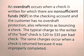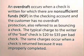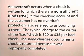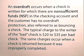An overdraft occurs when a check is written for which there are non-sufficient funds in the checking account and the customer has no overdraft protection, also referred to as bouncing a check. The typical charge to the writer of the bad check is $20 to $35 per bad check. The same charges occur when a check is returned because it was improperly completed.